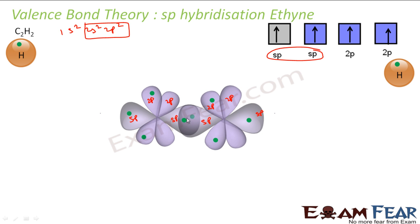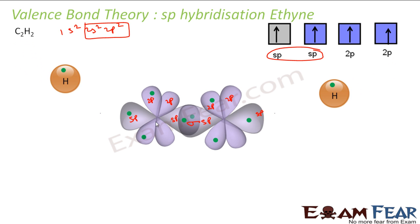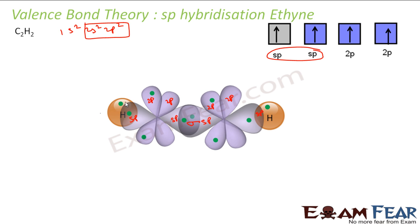The two sp orbitals on adjacent carbons, since they each have an unpaired electron, form a sigma bond by head-to-head overlap. The hydrogen atoms also each have one unpaired electron in their s orbital, and they form a sigma bond with the sp orbitals on each carbon end.